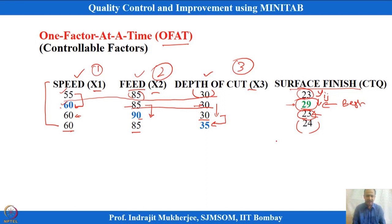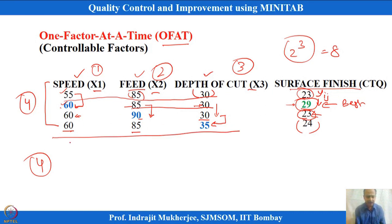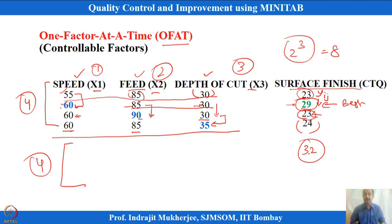There are 3 variables and 4 combinations shown here, but there are another 4 remaining combinations not explored. With 3 factors each at 2 levels, total possible combinations are 2³ = 8. When doing one-factor-at-a-time and moving linearly from one dimension to another, we stopped at 4 combinations. Although the number of trials is less, if we had done another 4 trials, some other combination of speed, feed, and depth of cut might have given a value like 32—improving the surface finish. One-factor-at-a-time does not do complete enumeration, so we may miss combinations that give higher surface finish values.